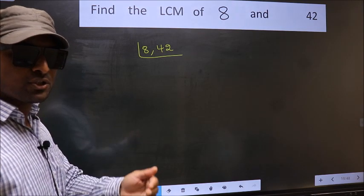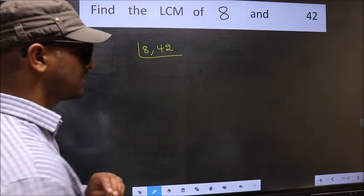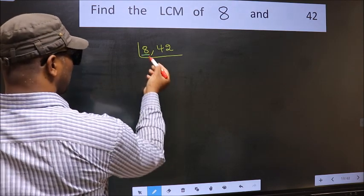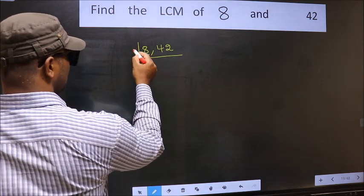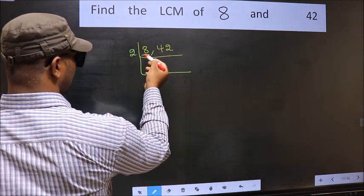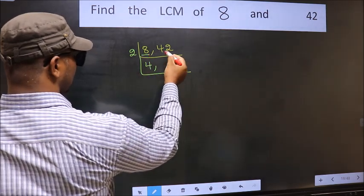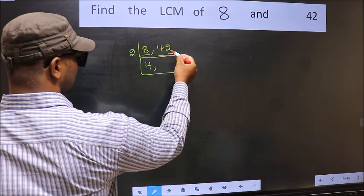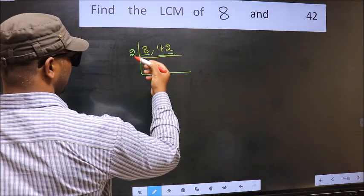Now you should focus on the first number, which is 8 here. 8 is an even number, so take 2. When do we get 8 in the 2 table? 2 times 4 is 8. Now the other number 42 — last digit 2, even — so this number is also divisible by 2.